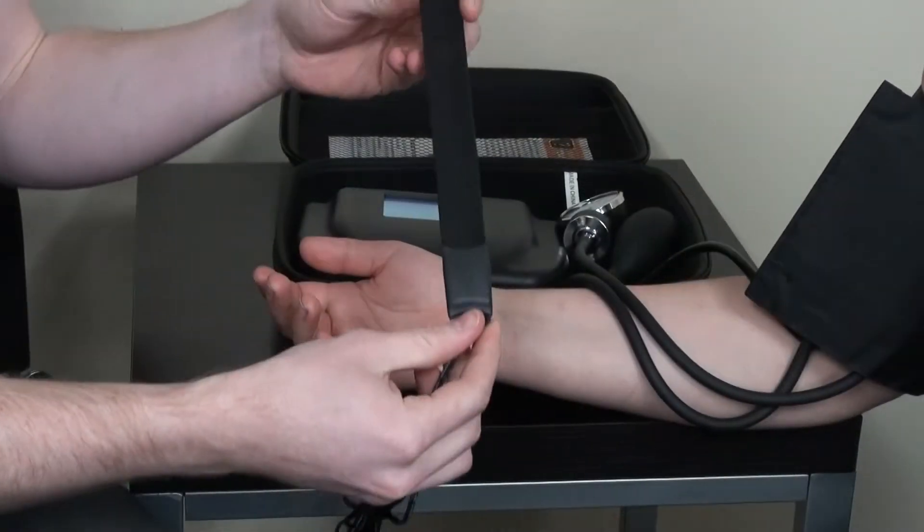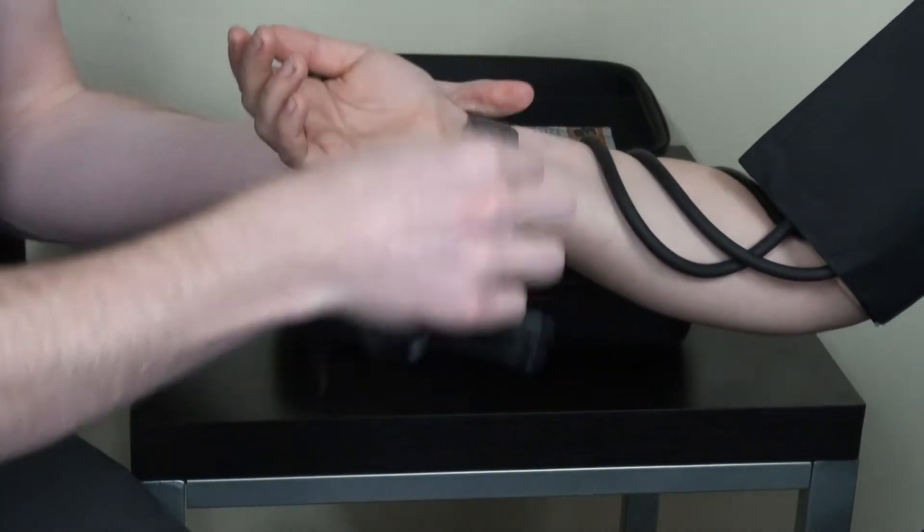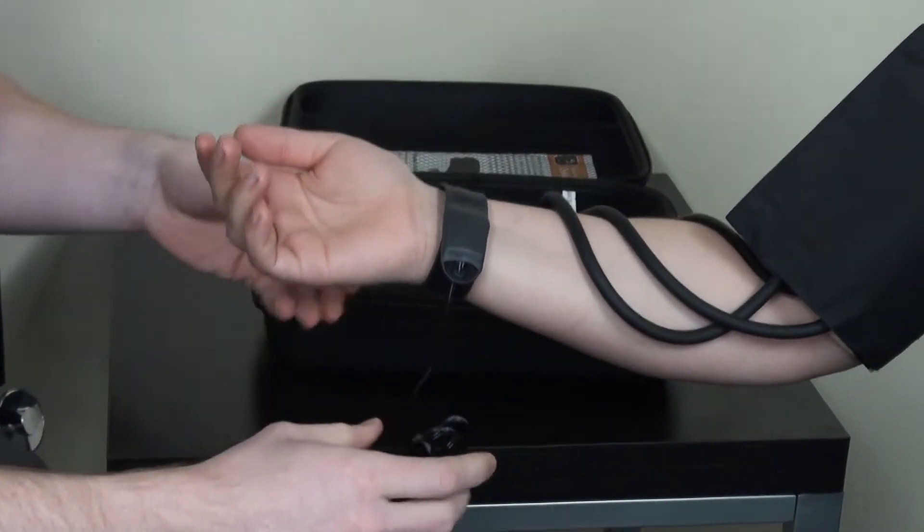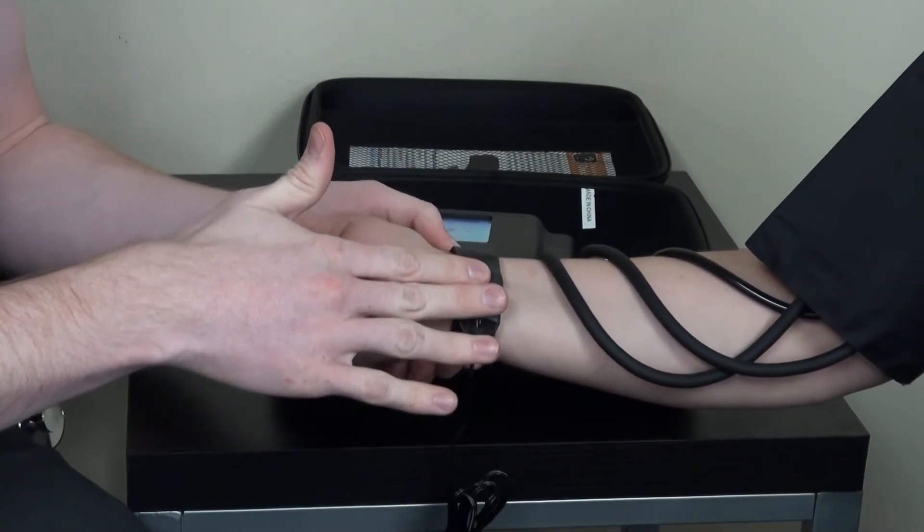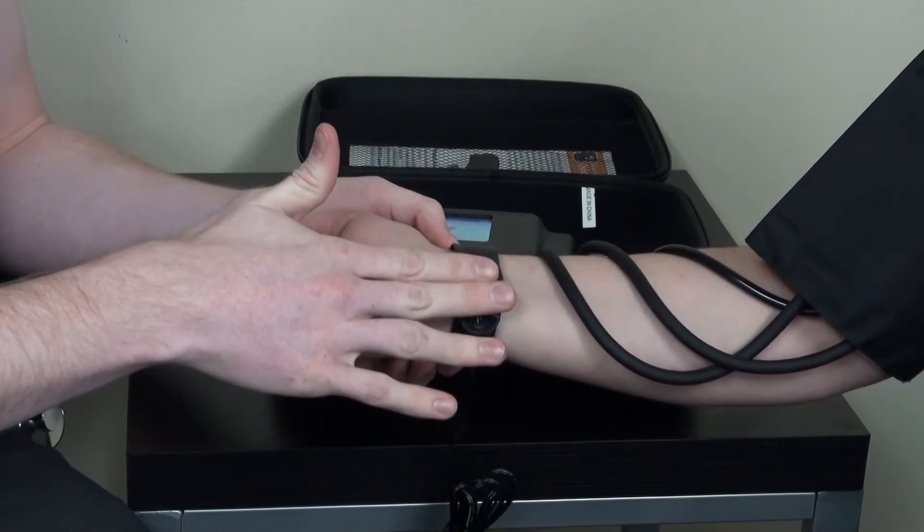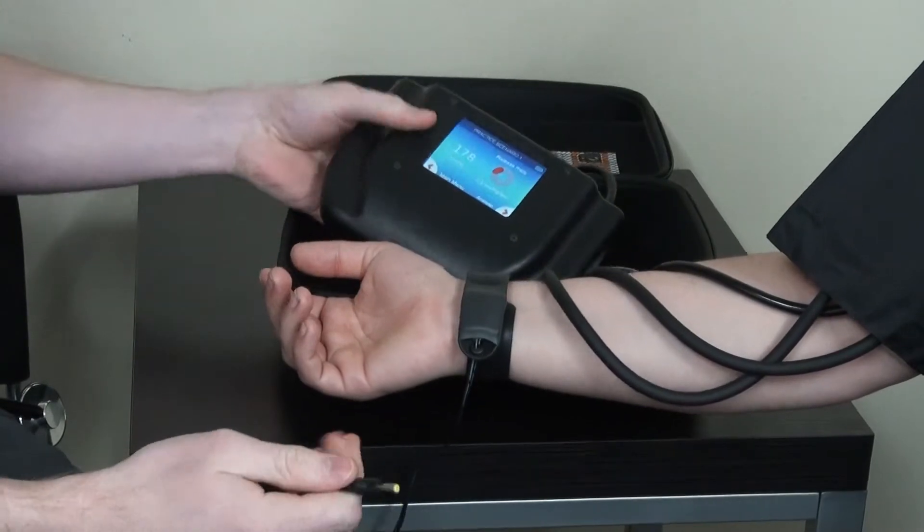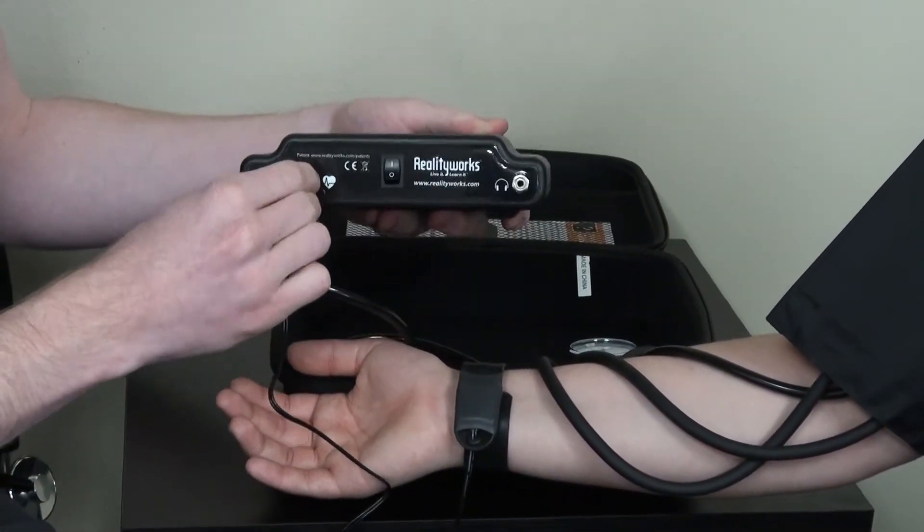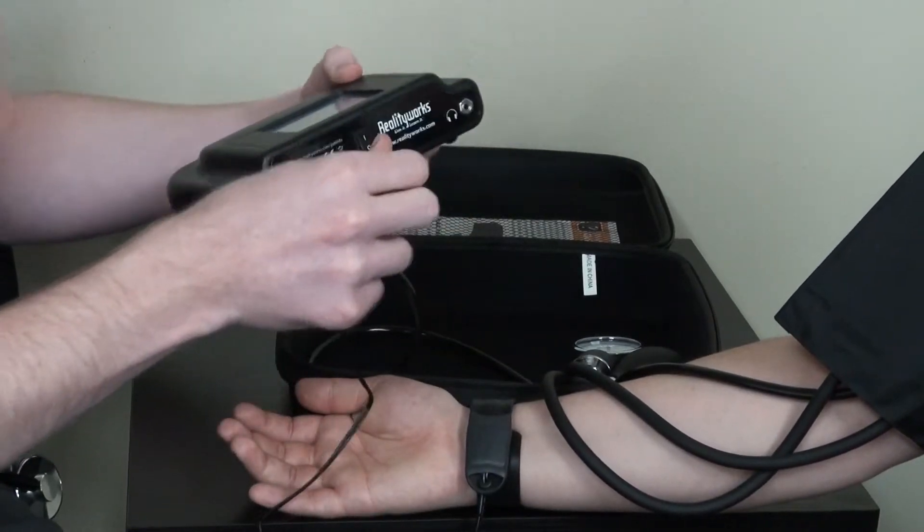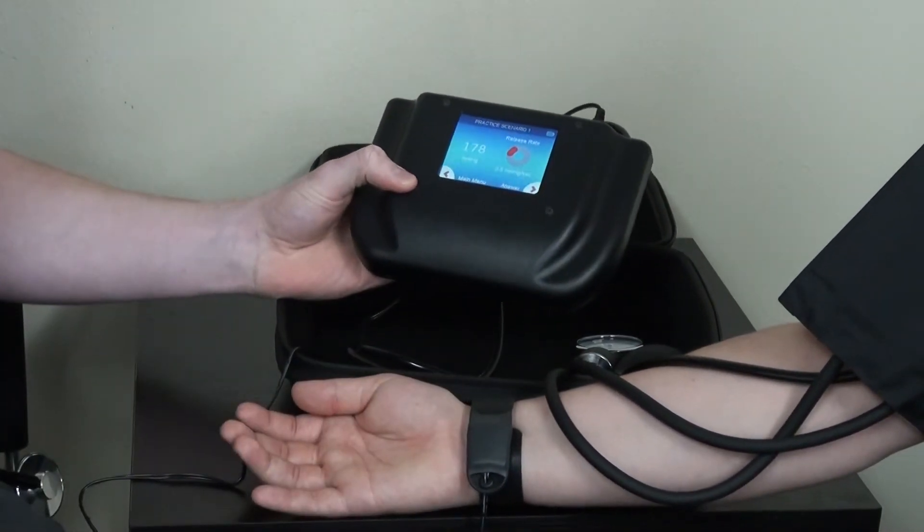We also provide this pulse band that simply snaps around the wrist of the patient and provides tactile feedback for the radial pulse for measuring blood pressure through the radial location. The radial pulse band plugs into the back of the box just like that and can now be used in conjunction with the cuff.